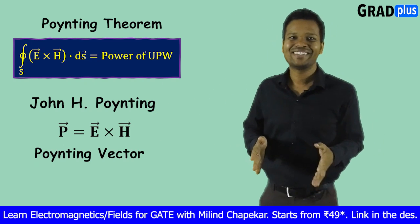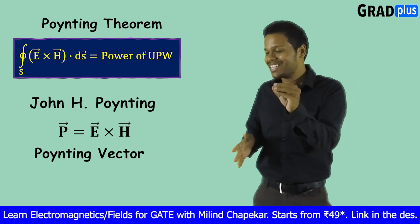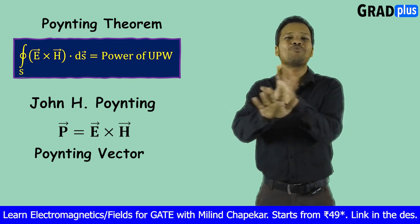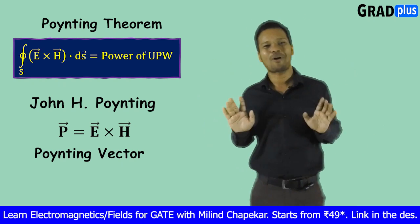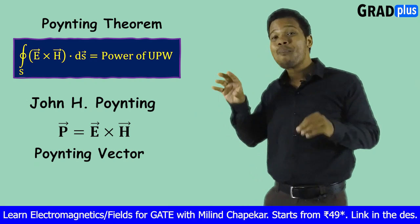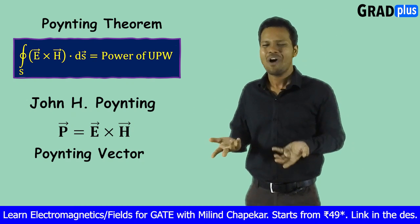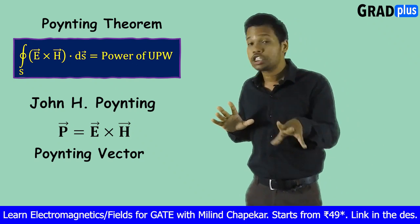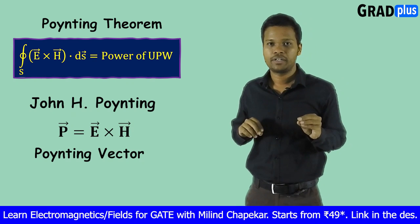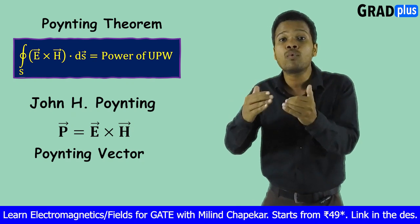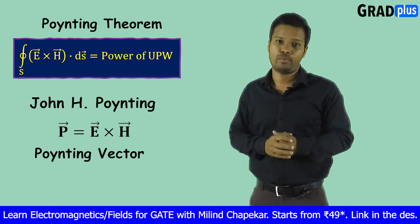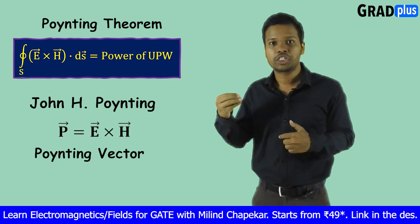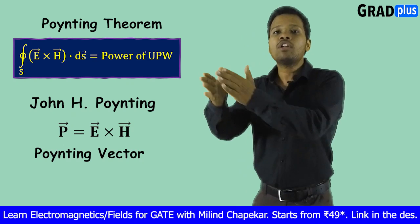But do you know that even if you write this as the Pointing Vector — P-O-I — then also there is no problem? You are also correct. You can also write it as the Pointing Vector. The reason is very simple: the surface integration of E cross H basically gives us the power of that uniform plane wave, the power of that EM wave. This surface integration E cross H denotes the power of the EM wave.